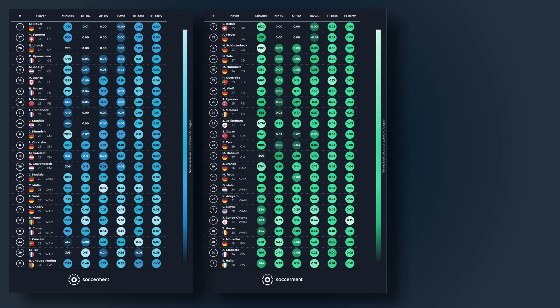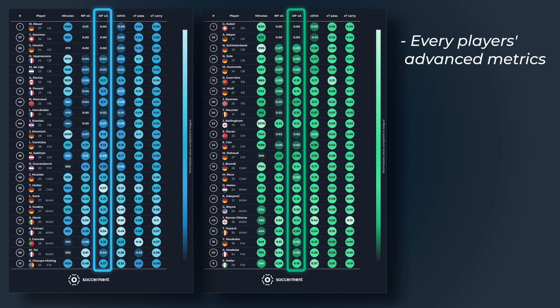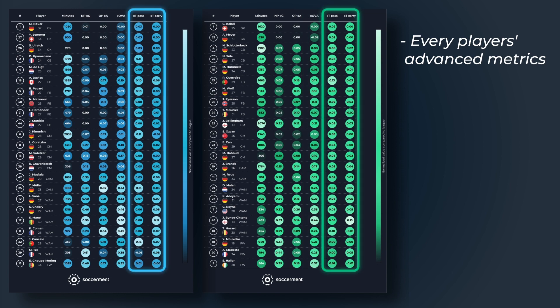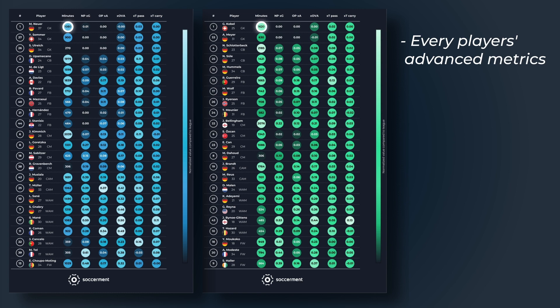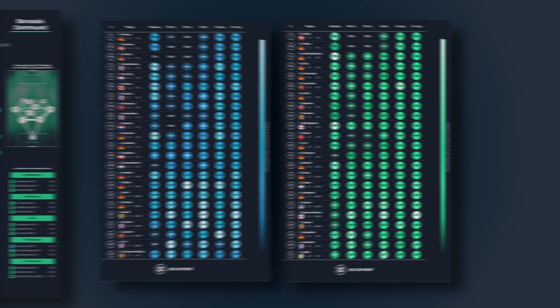Finally, the player advanced metrics highlights every player's values in advanced metrics such as non-penalty XG, open play expected assists, expected offensive value added, and expected threat from passes and carries. The number in each circle represents that player's value, with brighter circles indicating a higher percentile rank compared to league averages, helping you quickly identify which players are the most influential in the team. By using all this information in the lead-up to the match, Sockermint gives you insights into the game you won't find anywhere else.